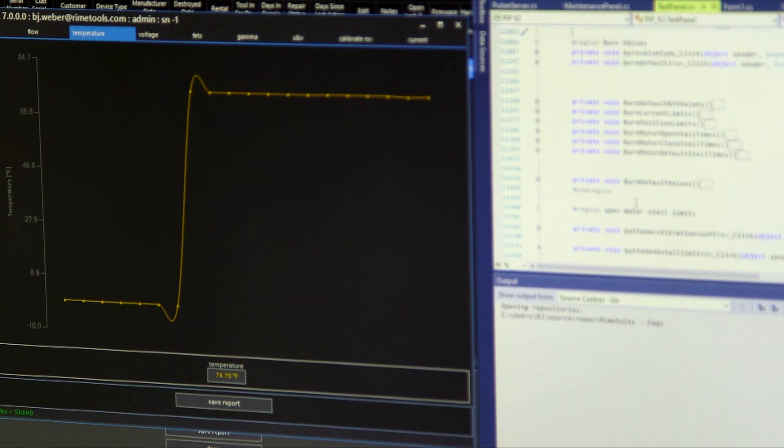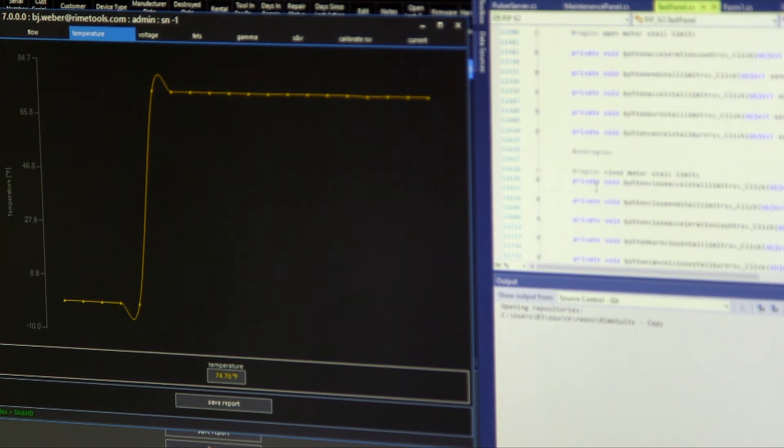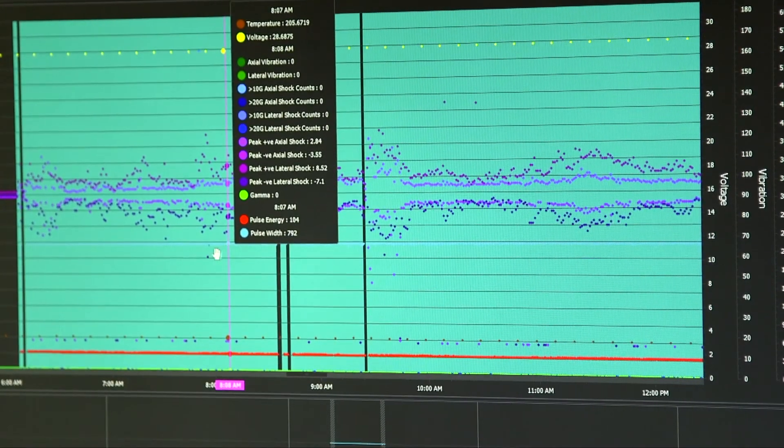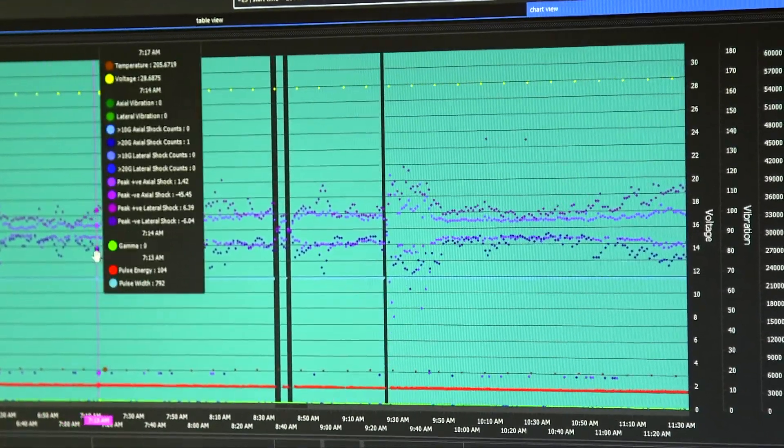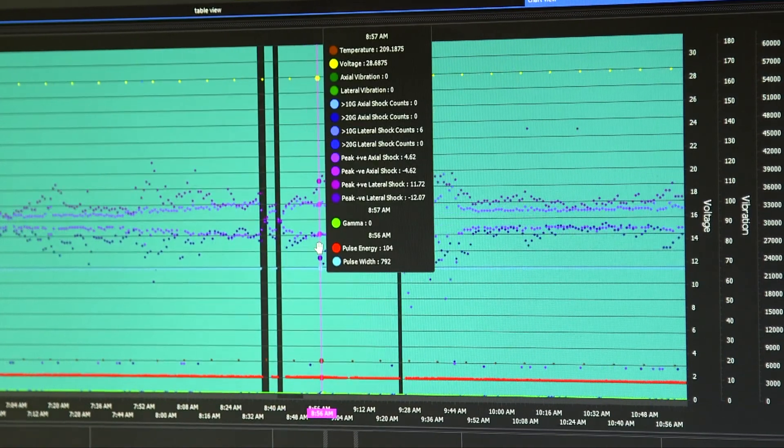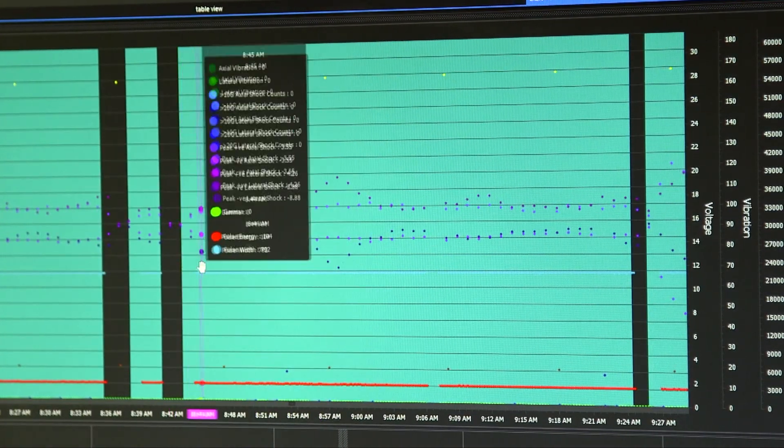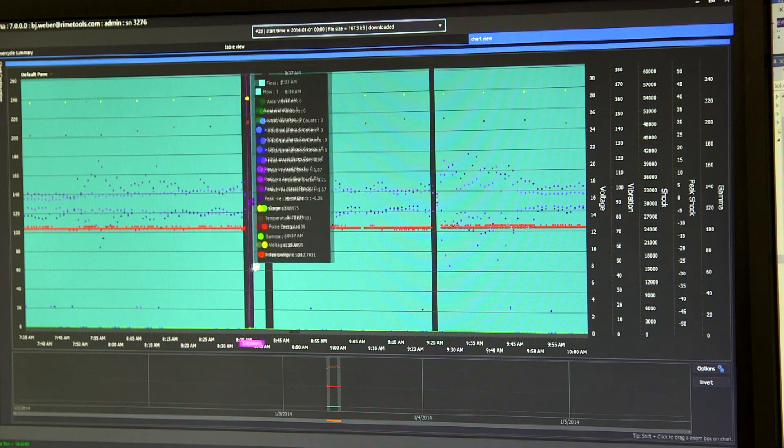Modern measurement while drilling tools aren't just metal wires and electronics. A huge part of what we do is firmware and software. The development of the firmware, which is the code that runs on microprocessors in our downhole tools, and software, which is the code that we run on our surface equipment to communicate with our downhole equipment, is a significant part of what we do as a company.